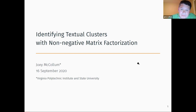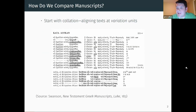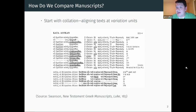Before we can get to that question of how we even classify manuscripts, we have to answer a much more basic question: how do we compare them? And the way we do that is through collation. You guys have been working on a homework exercise on collation this last week, so you should understand most of the basics. The goal is to align the text as found in different manuscripts as closely as possible. After that, you'll have places left over where there are still differences — we call those places variation units, and the different readings found in different manuscripts at those places are called variant readings.